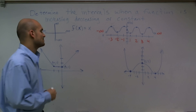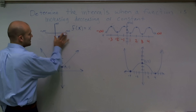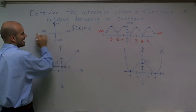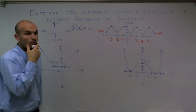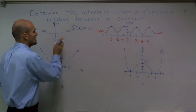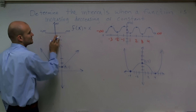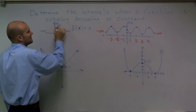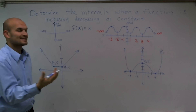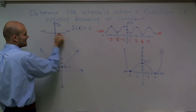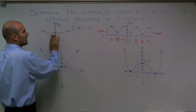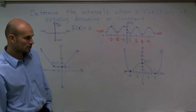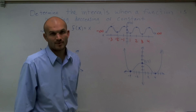A couple of things we need to remember. When we're looking at a graph, it has an x-axis and a y-axis. Since we're talking about functions, rather than calling it a y-axis, we're going to call it our f of x axis, because it's our output axis. Our input goes from left to right, and our output is vertical. So let's take a look at this graph.